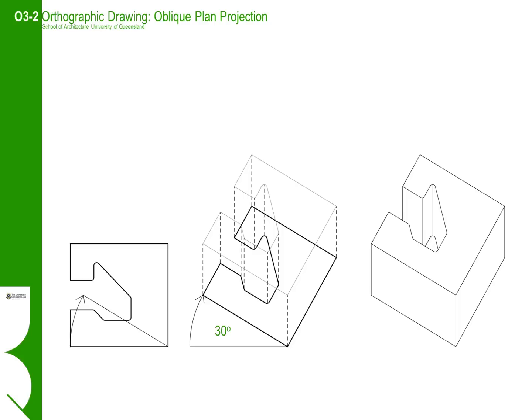Starting with one of the plans, what we do is rotate the plan so that the left-hand side geometry is angled to the horizontal or bottom of your drawing board at 30 degrees. Being a plan oblique, the plan we will be using will be rectilinear, so the geometry receding to the right should be at 60 degrees to the horizontal. We would typically tape the plan onto the drawing board with masking tape and then place a fresh sheet of tracing paper over the top to start the drawing.